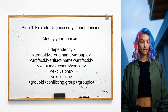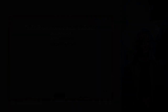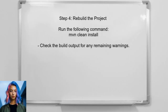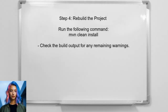Once the conflicting dependencies are identified, you can exclude the unnecessary ones. This can be done by modifying the Maven pom.xml file to exclude specific transitive dependencies. Finally, rebuild your project to ensure that the changes take effect — this will help confirm that the warnings have been resolved.